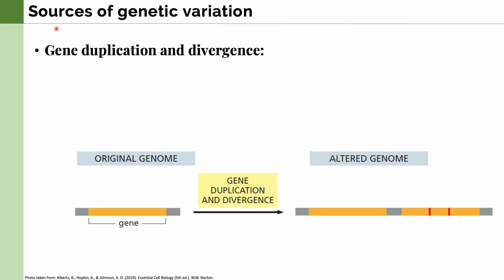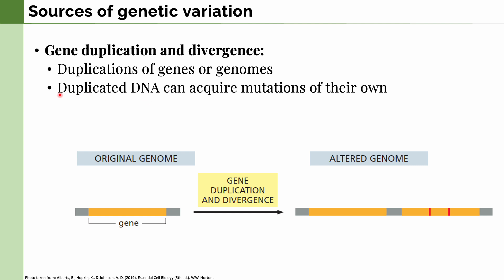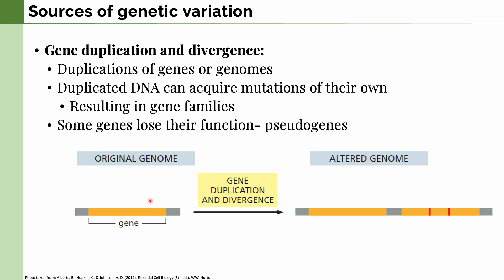Moving on to the other sources of genetic variation, the next we will discuss is gene duplication and divergence. These involve the duplication of genes or even whole genomes in some instances. They lead to divergence because duplicated DNA can acquire mutations of their own, resulting in gene families — groups of genes with similar enough sequences that we can trace their lineage. In this figure, we see the original genome with one copy of a gene, and the altered genome with two copies, one of which has a mutation. If enough mutations occur in this new gene, it can result in divergence. Some genes lose their function rather than gain new ones, and we call those pseudogenes.